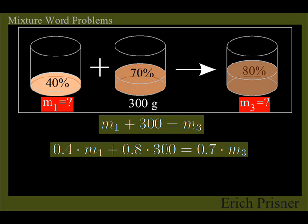We plug this into our two equations 1 and 2 and get M1 plus 300 equals M3 and 0.4 times M1 plus 0.8 times 300 equals 0.7 times M3.